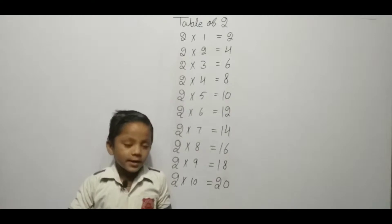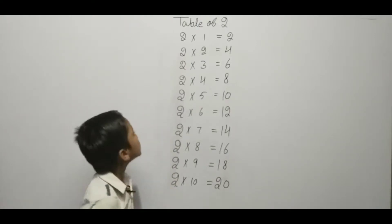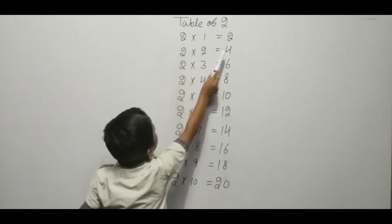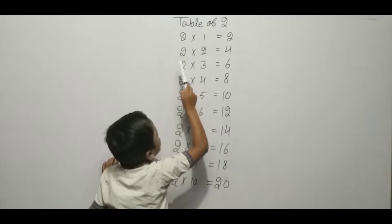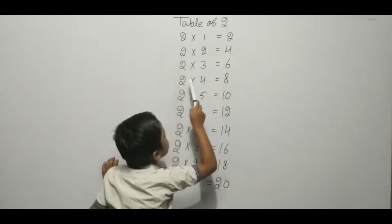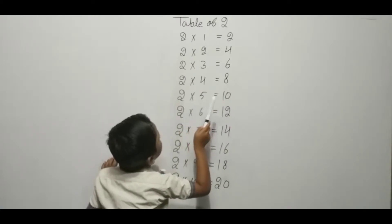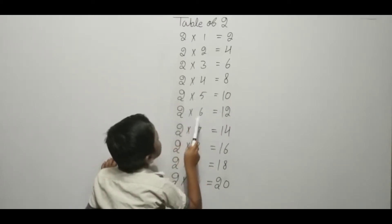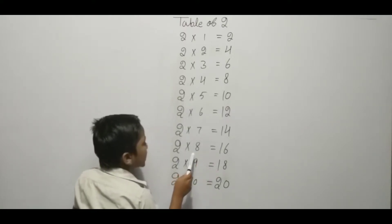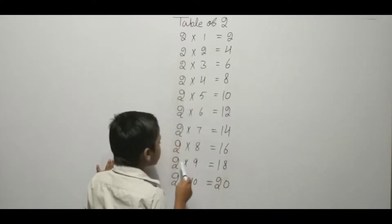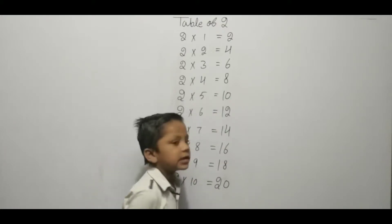Hello friends, we are learning. There are two. Two one ja two, two two ja four, two three ja six, two four ja eight, two five ja ten, two six ja twelve, two seven ja fourteen, two eight ja sixteen, two nine ja eighteen, two ten ja twenty. Thank you.